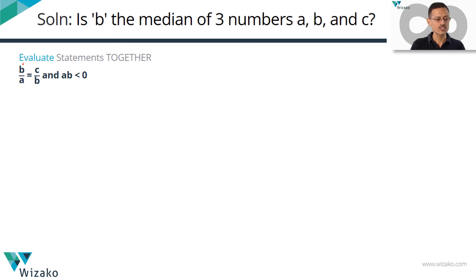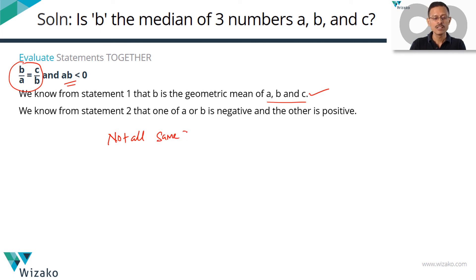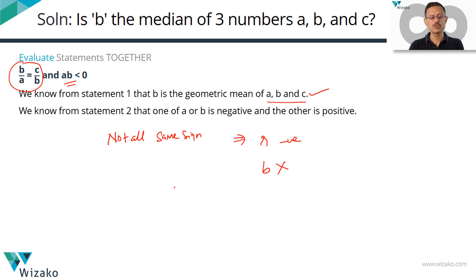Let's combine the two statements. Statement 1 tells us A, B, C are in GP. Statement 2 tells us one of A or B is negative and the other is positive. Since these three numbers are in a GP and not all of the same sign, the common ratio must be negative. If the common ratio is negative and B is the geometric mean, then B will not be the median — it's going to be A or C. So combining the two statements, we conclude that B is not the median.